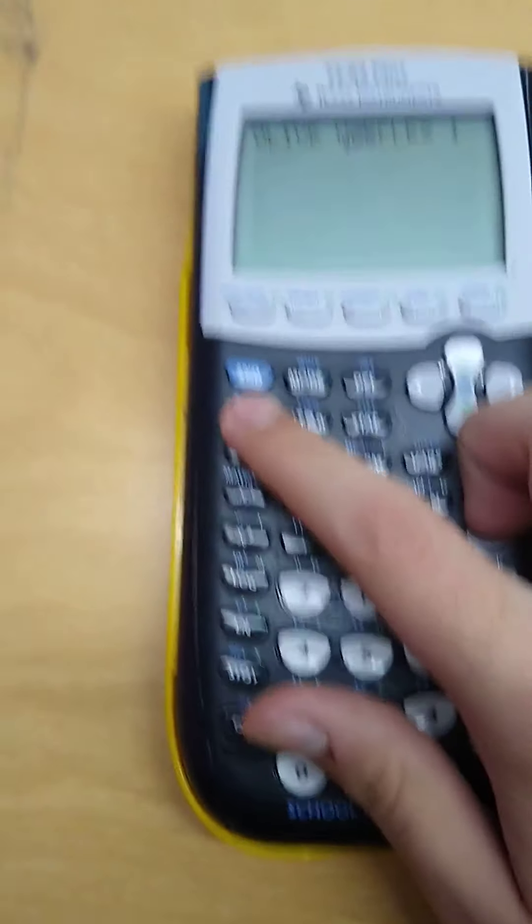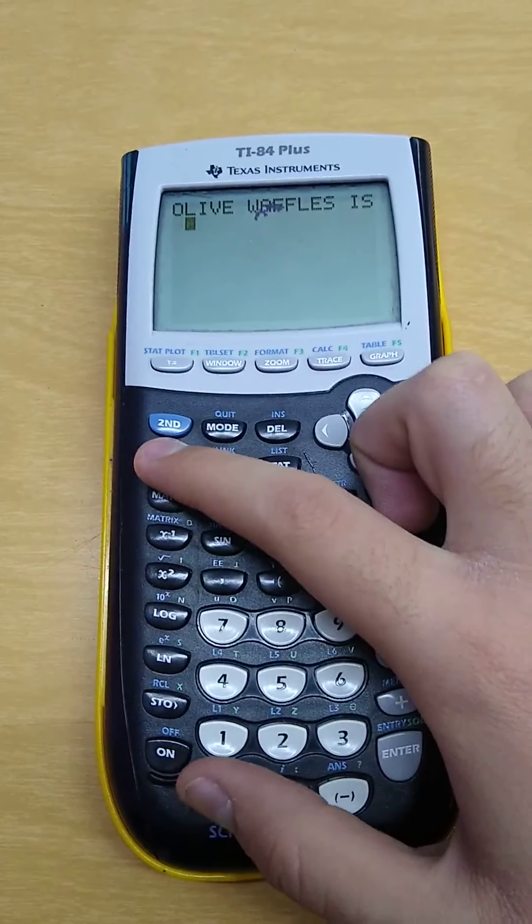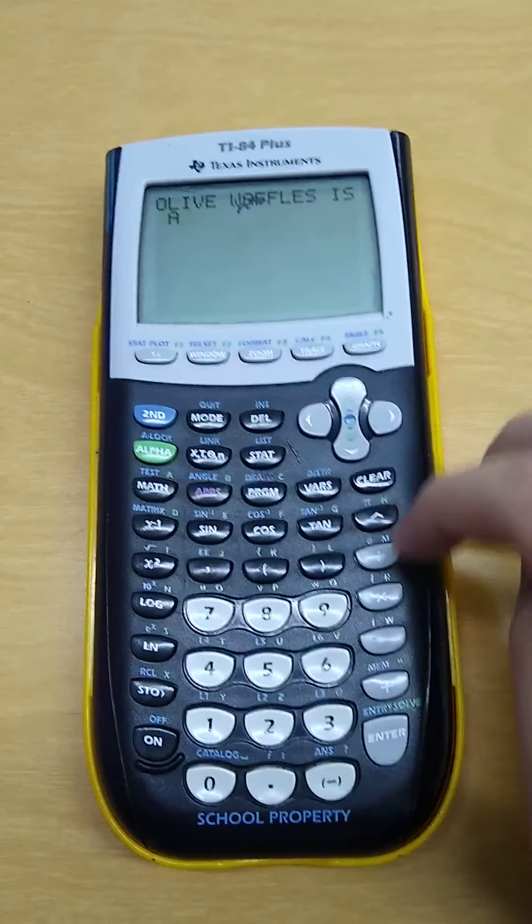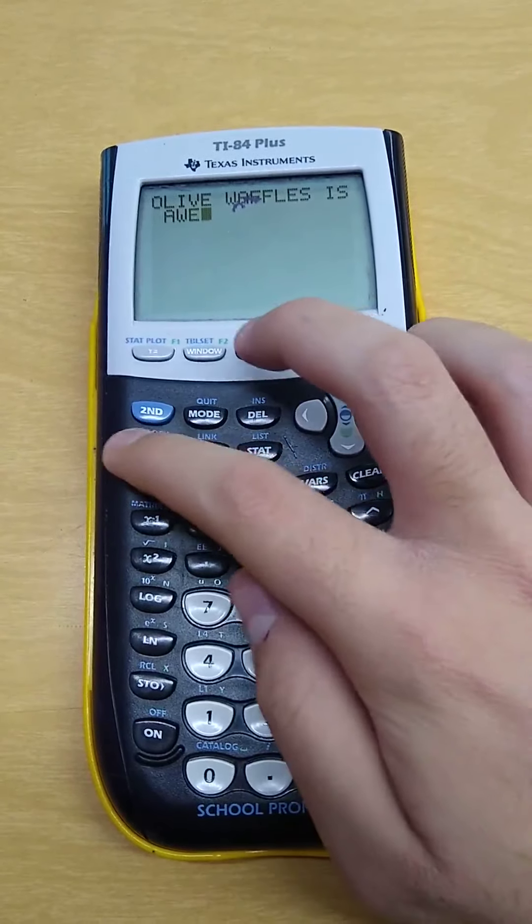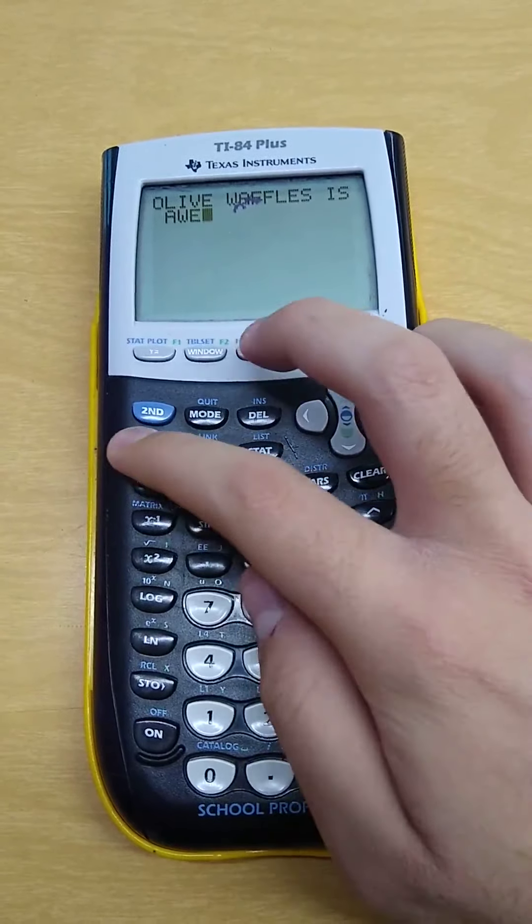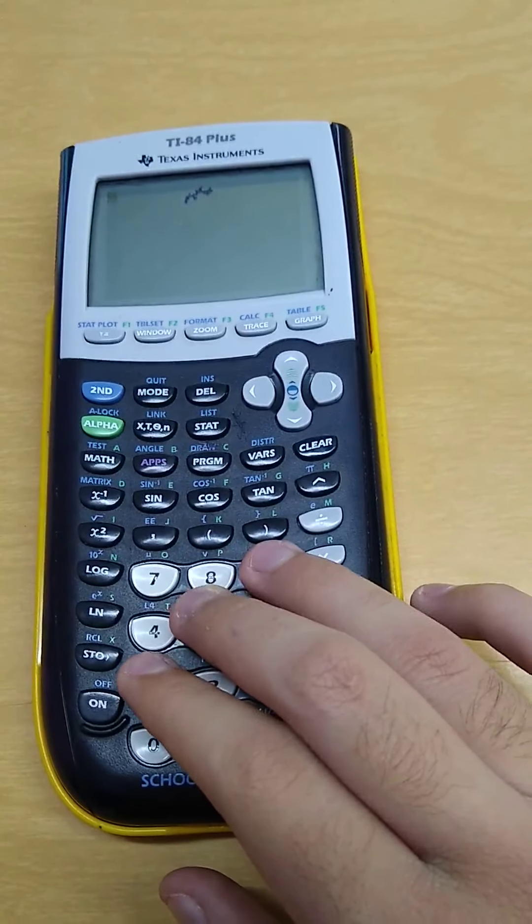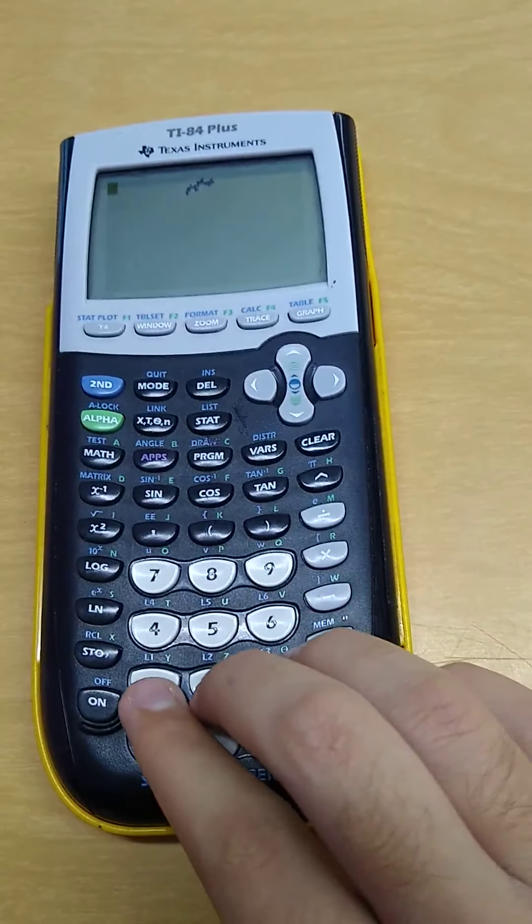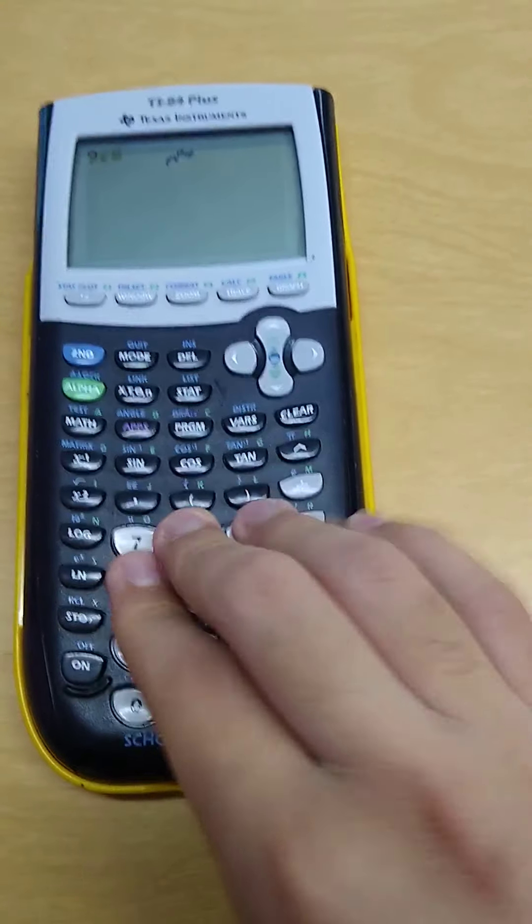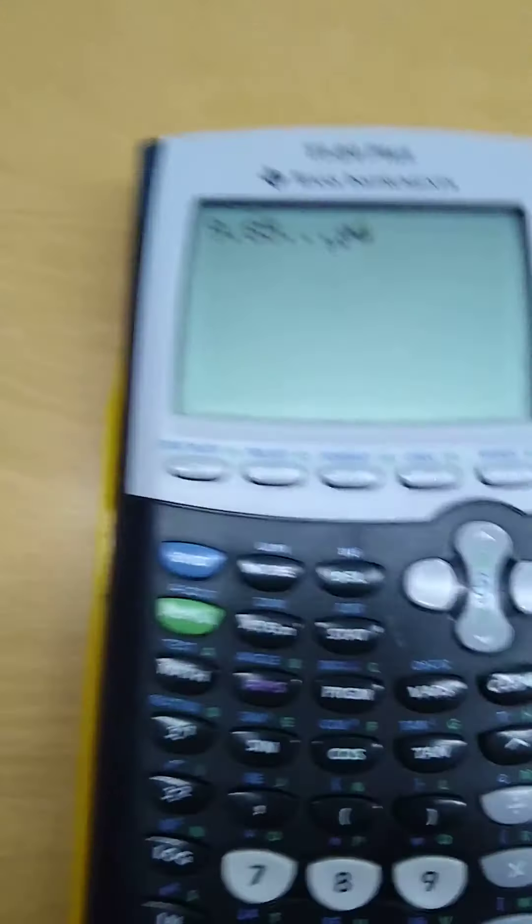So this is a pretty neat calculator made by Texas Instruments. But that's not the point. The point is not the letters. The point is I'm going to be typing Reddit's favorite number, 69, exactly 69 times in this calculator. You think I'm joking.